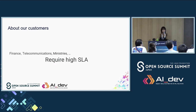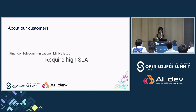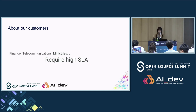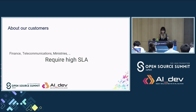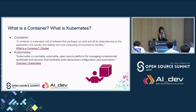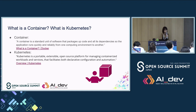Our customers are, for example, in finance, telecommunications, ministries, and so on. They provide many services which Japanese consumers use. In these industries, a high service level agreement is required. In such a situation, I will talk about the reason why our customers select containers or Kubernetes.